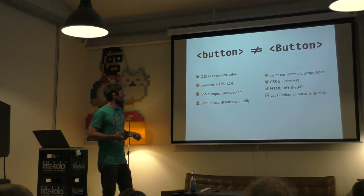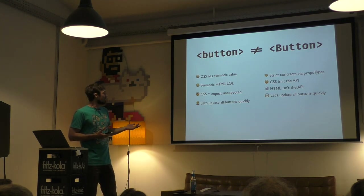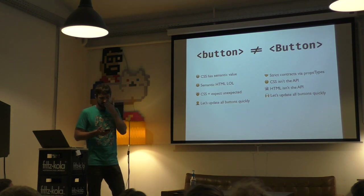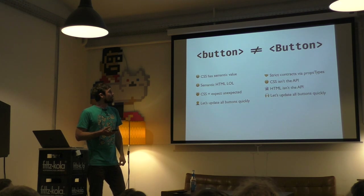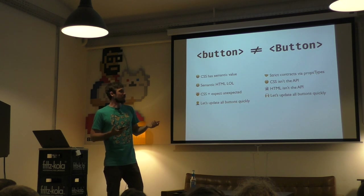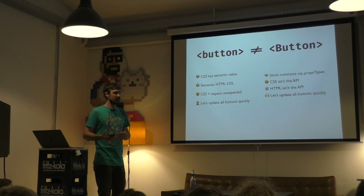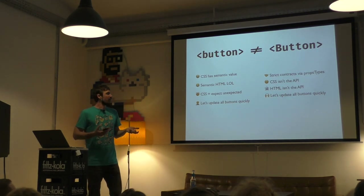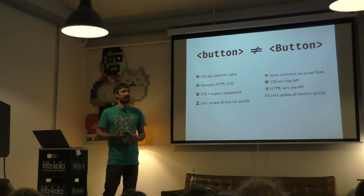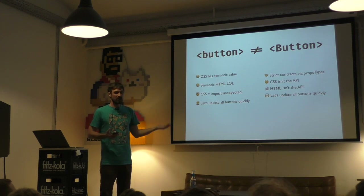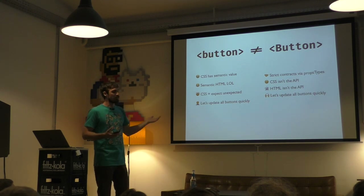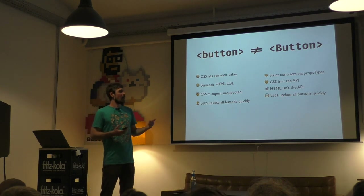Nobody reads HTML much these days anyway. But the important thing is: when design requirements change and we need to update all the buttons quickly, with component-driven development we can alter the Button component and establish a strict contract with prop types. We can type them with Flow, TypeScript, or just prop types and get warnings if we use the wrong variant. The CSS and HTML become implementation details — not part of the API. I'm talking about the API that component library users would see. And when we find a bug in a button, we go into the button component and fix it without touching any line of application code.